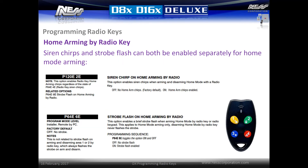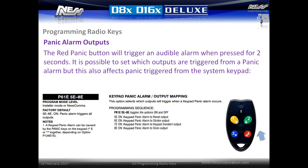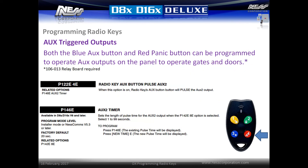It is also possible to enable siren chirps and strobe flashes for home mode arming. Option p120e 2e will cause the siren to chirp when arming in home mode from a radio key. Option p64e 6e will cause the strobe to flash on home arming by radio key. The red panic button will trigger an audible panic alarm when pressed for two seconds. To set which outputs are triggered from the panic alarm, enter option p61e and enable or disable options 5e through to 8e. For example, to change the panic alarm to a silent duress alarm, enter p61e and disable all options 5e through to 8e.